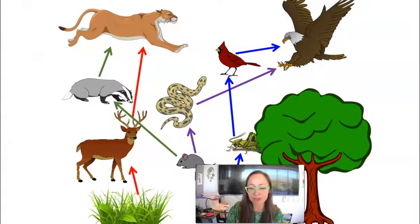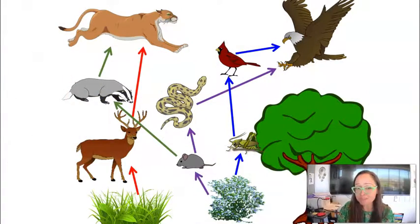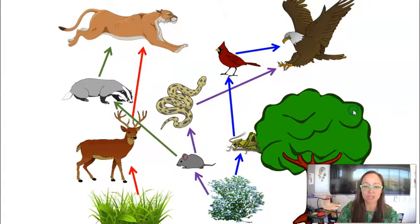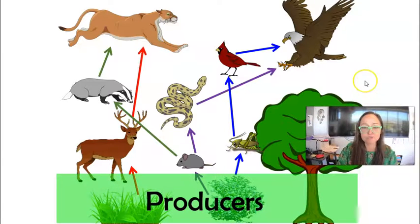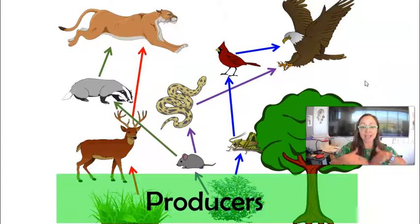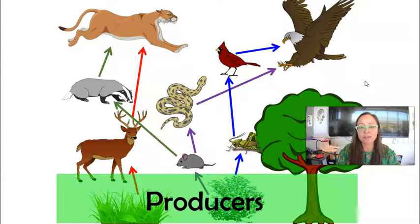When we talk about food webs and different organisms within an ecosystem, we can break them up and define them in different ways. The bottom of the food chain or food web is the producer level. When we talk about how much energy is in an ecosystem, it's really going to be based on the producers.